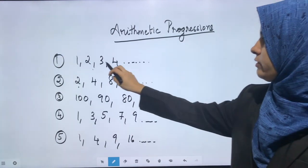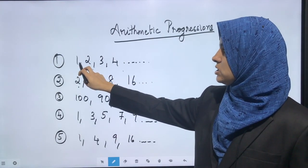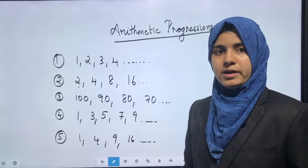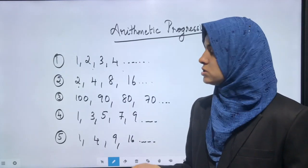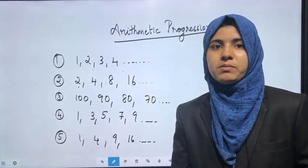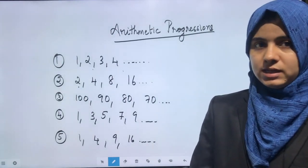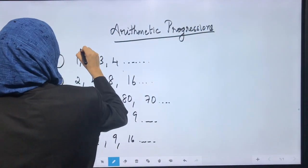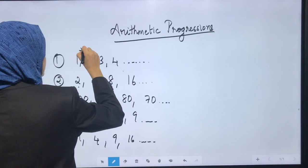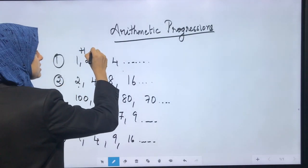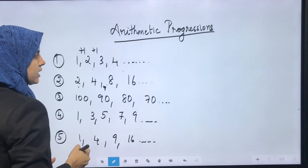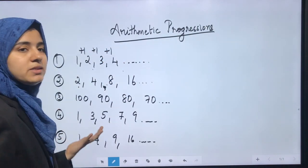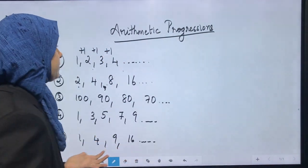In the first example — 1, 2, 3, 4 — each term is obtained by adding 1 to the preceding term to get the next term. So 1 plus 1 is 2, 2 plus 1 is 3, and 3 plus 1 is 4. We can predict the next number will be 5.